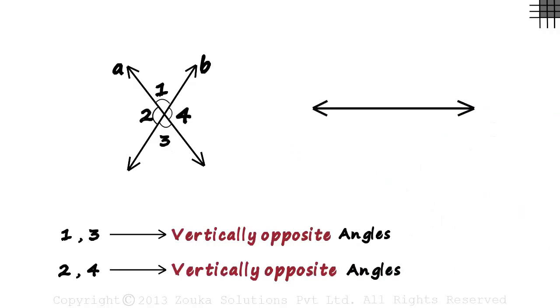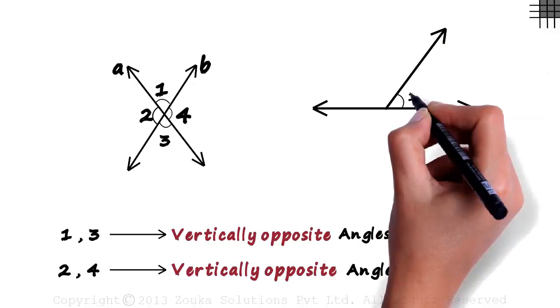If we have a line on a plane and a ray from any point on the line, then two angles are formed: Angle 1 and Angle 2.